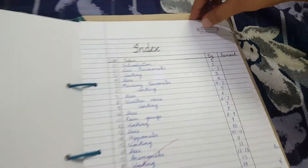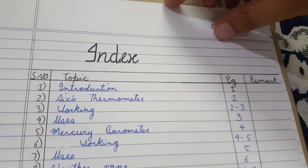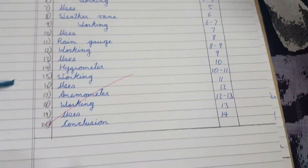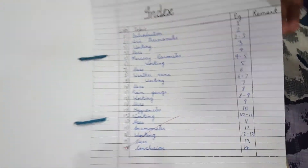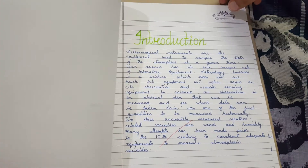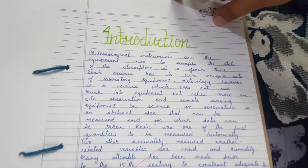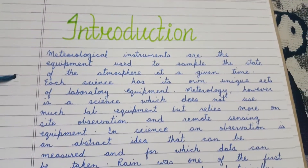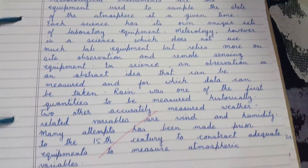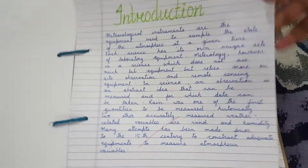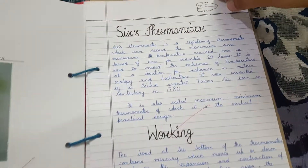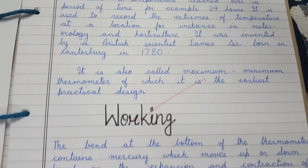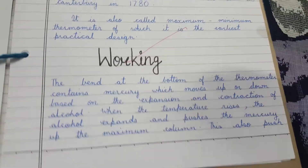This is the Index, and here comes the Introduction about the instruments — an overview of how to use them. The first instrument is the Six's Thermometer, covering its description and working.